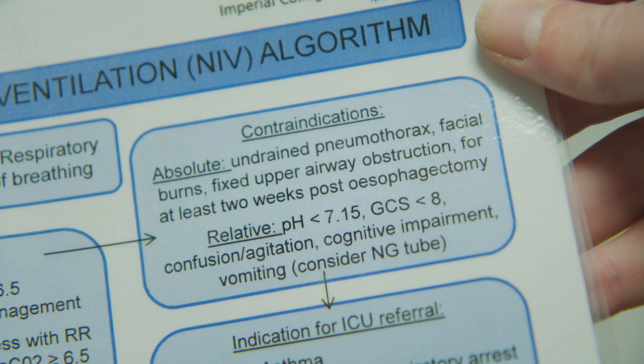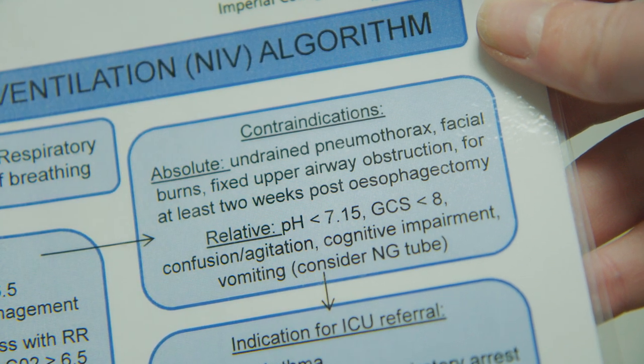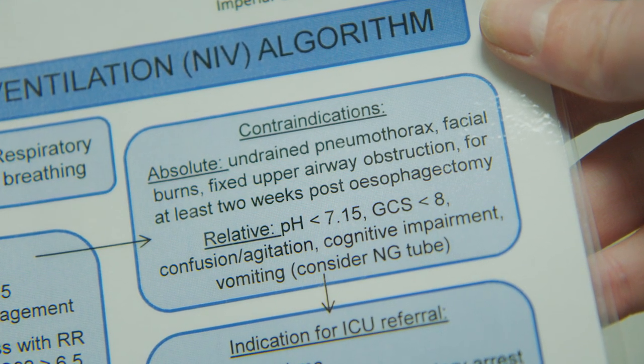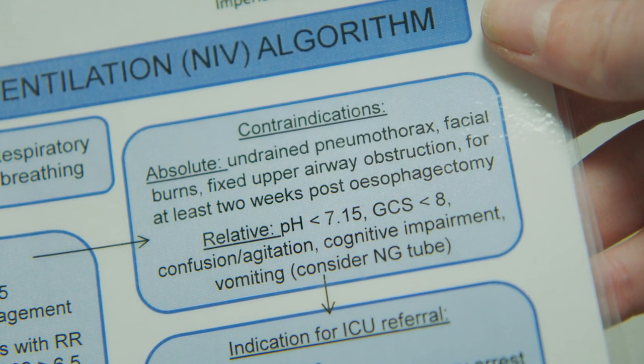Before starting NIV, it's important to check there are no contraindications to treatment. Therefore, before starting NIV, you should ensure the patient has had an ABG to determine type 2 respiratory failure — unless they have excessive work of breathing — and ensure the patient has a chest X-ray to rule out a pneumothorax.